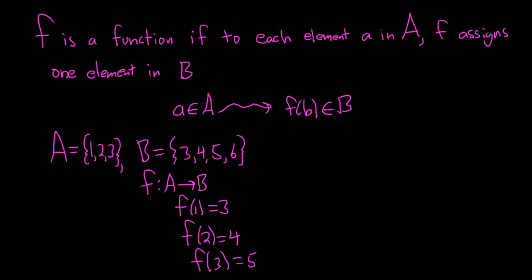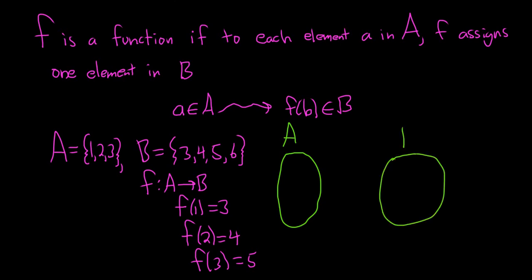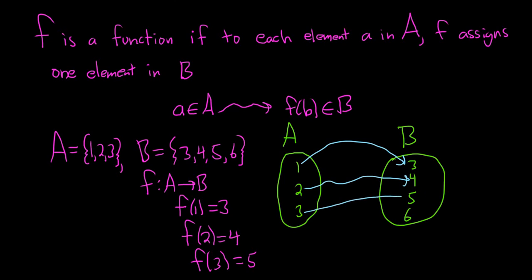And that's it — we have a function. If you wanted to draw a picture to represent this, you could use little diagrams. You could call this A and this B. Here's 1, 2, 3 with little dots, and here's 3, 4, 5, 6. So A is the domain, B is the codomain. We know that 1 goes to 3, 2 goes to 4, 3 goes to 5. Notice that nothing goes to 6 — that's okay. For it to be a function, everything in A has to get assigned to an element in B, and we've done that.